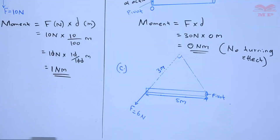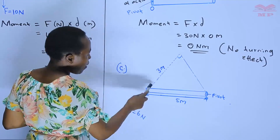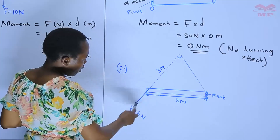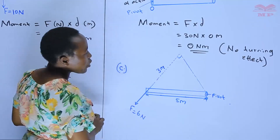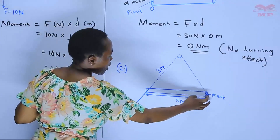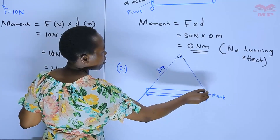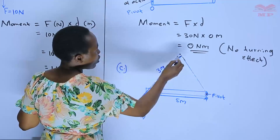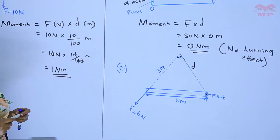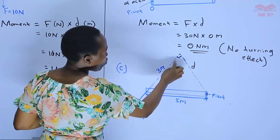The point of support is here, and the force is acting at an angle. The distance from the pivot to the force is not the perpendicular distance to the line of action. The perpendicular distance D is what we need to consider. We need to calculate D using these right-angled values: five is the hypotenuse and three is one of the sides.